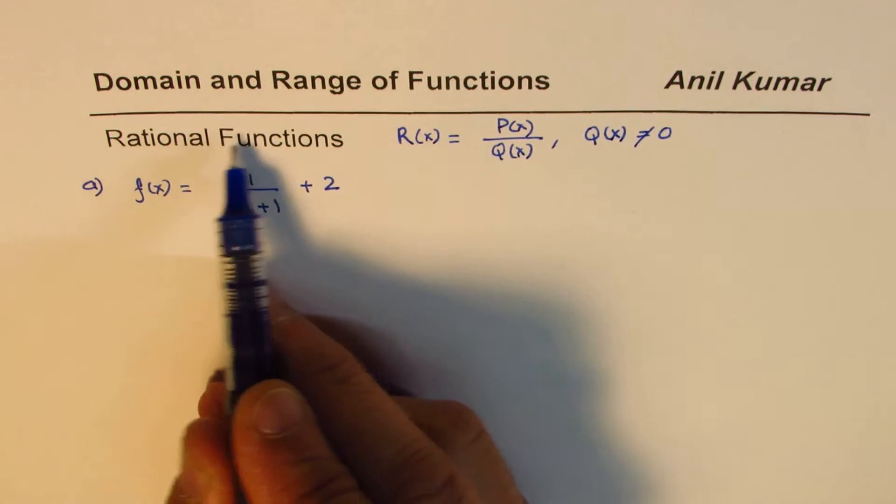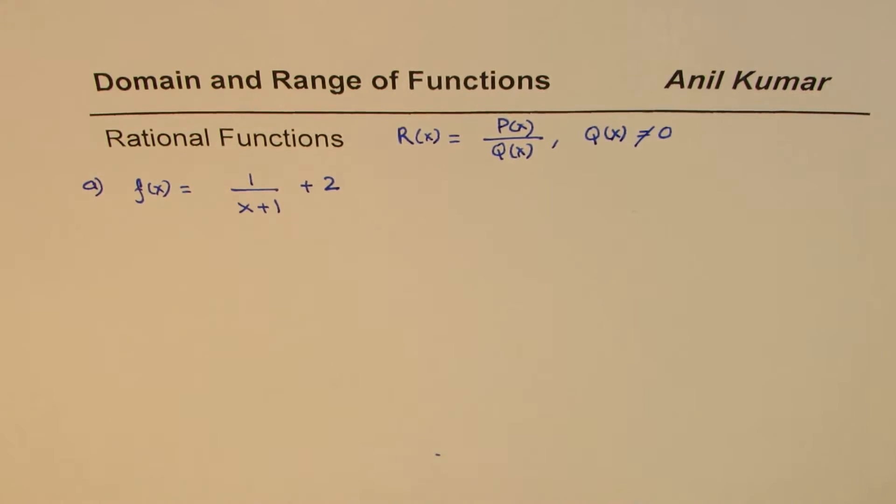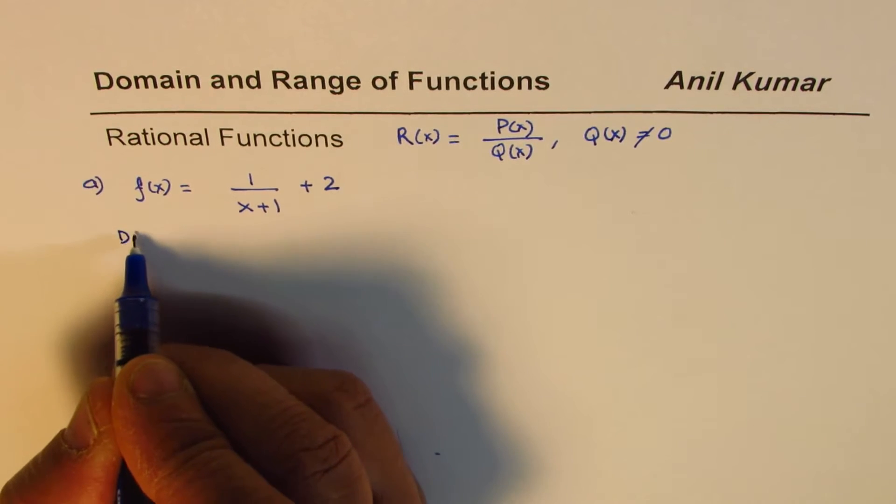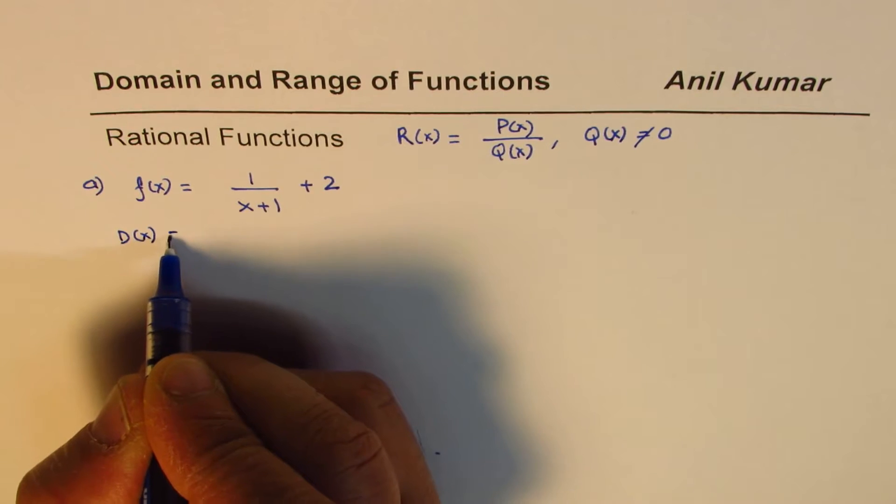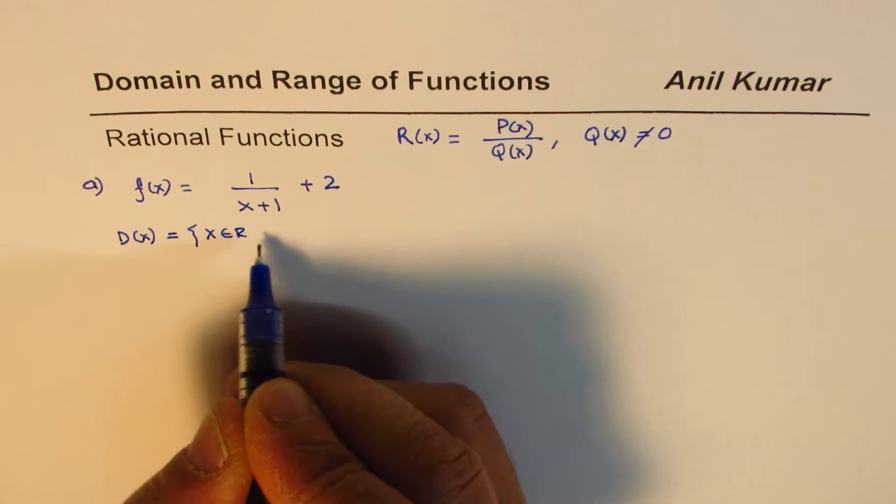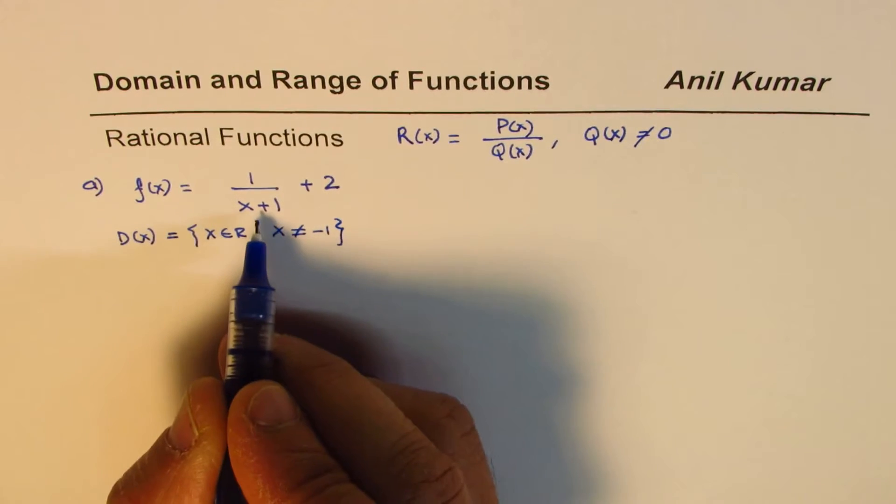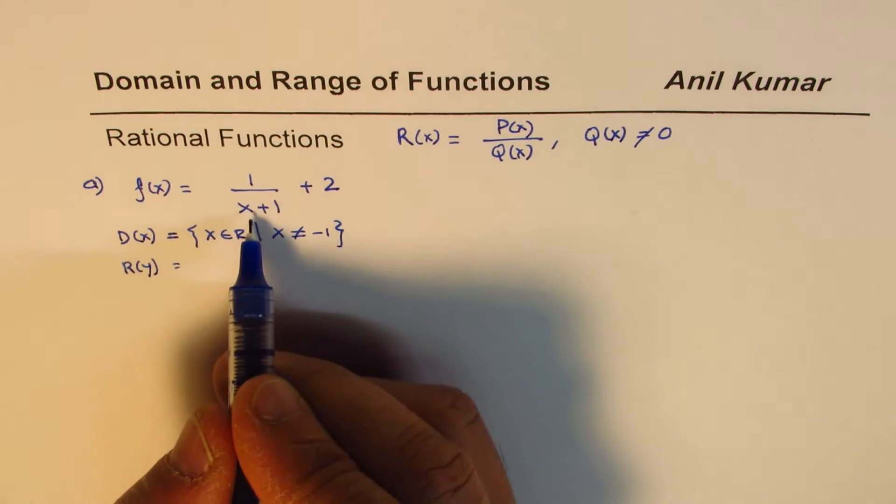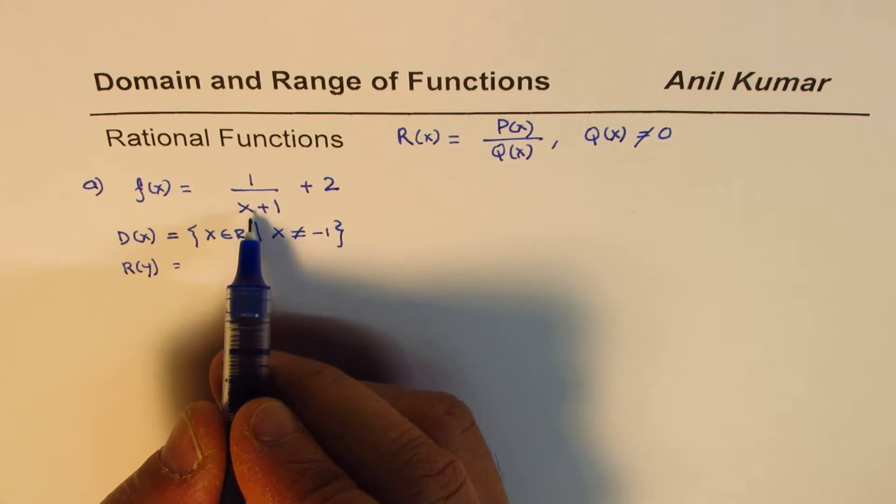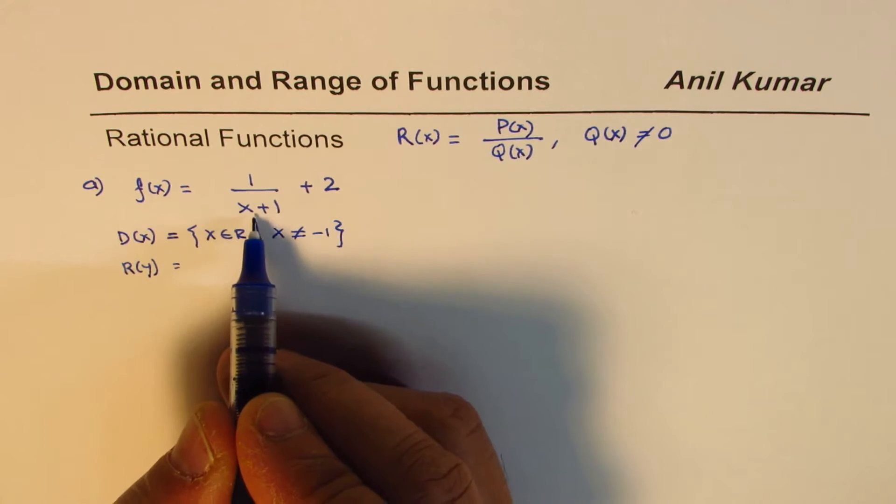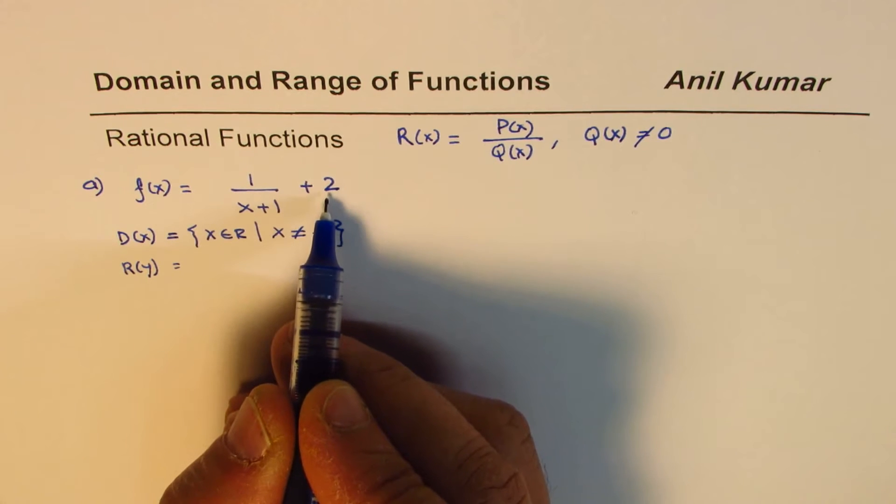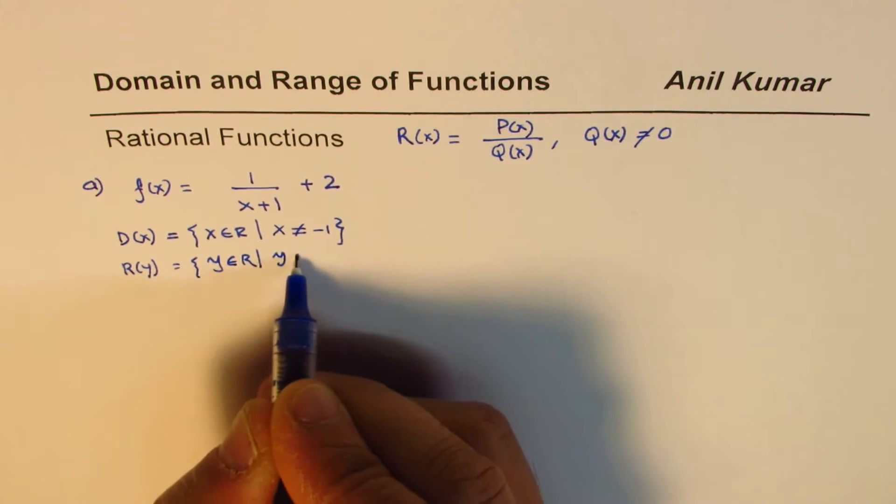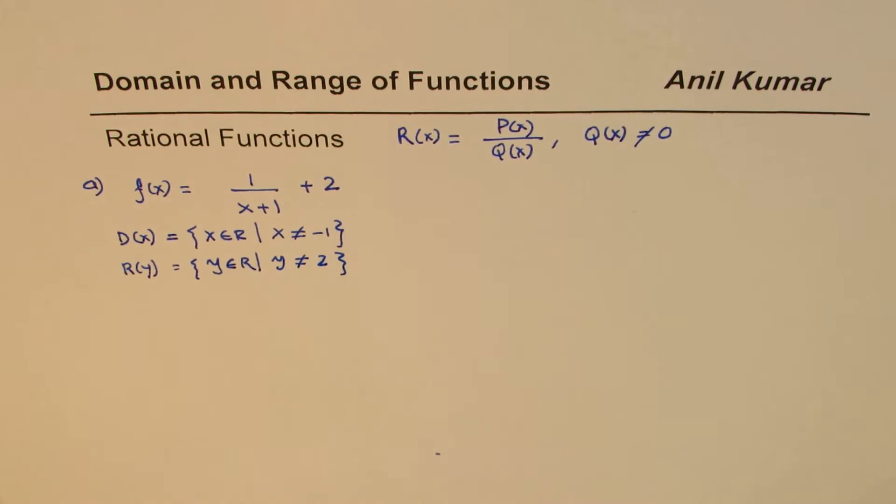Reciprocal function is a special case of rational function. If I give you this function, you can easily write domain and range. For this function, domain is x belongs to real numbers, and x is not equal to -1, since that will make this denominator 0 and you cannot divide by 0. As far as range is concerned, this value has to be extremely high to make the whole thing 0. If this cannot be 0, the function cannot be 2. In fact, the horizontal asymptote is at 2. So the range is y belongs to real numbers, but y is not equal to 2. That is a very simple way of getting the solution.